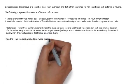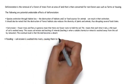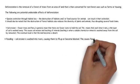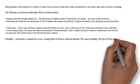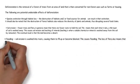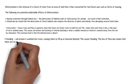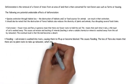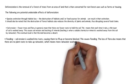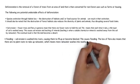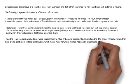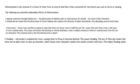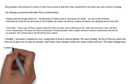Flooding. Soil erosion is washed into rivers, causing them to fill up or become blocked, which causes flooding. The loss of flora also means that there are no plant roots to take up rainwater, which means more rainwater washes into nearby streams and rivers, making flooding easier.